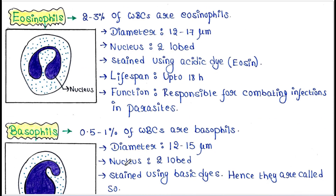Next is eosinophils: 2 to 3 percent of WBCs are eosinophils. Diameter 12 to 17 micrometers. Nucleus is 2 lobed. They are stained using acidic dye eosin, hence they are named eosinophils. Lifespan up to 18 hours. Function: they are responsible for combating infections in parasites.